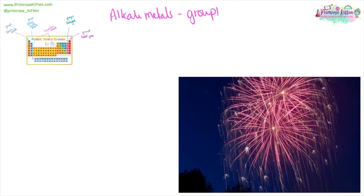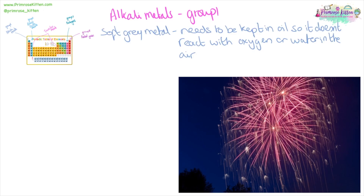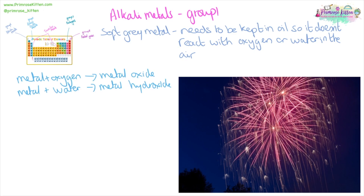Your alkali metals react very violently with water, and this is where you're going to see some flames and different colors. This is one of the things we use to make the different colors in fireworks — the lovely lilac flame from potassium. These are soft grey metals which are easily cuttable. They need to be kept in oil so they don't react with oxygen or the water in the air, because it's a very violent reaction. When the metal reacts with oxygen we get a metal oxide — when cut it was shiny, but it quickly started to dull, and that dullness is the metal oxide.